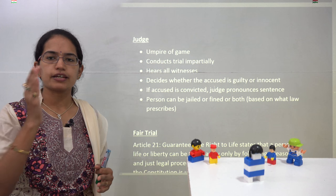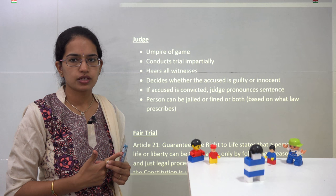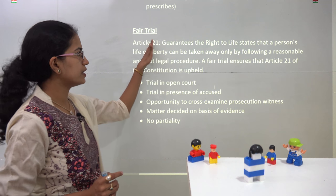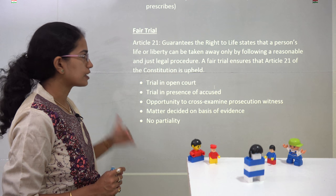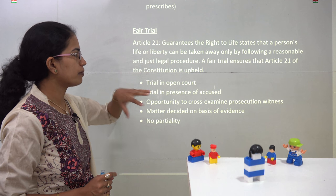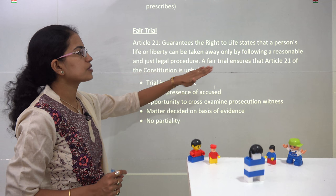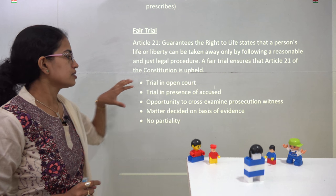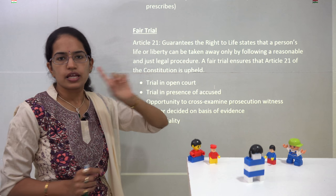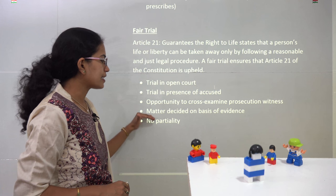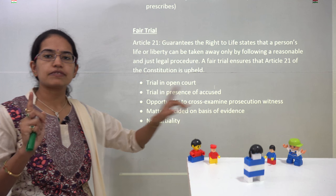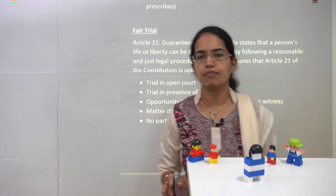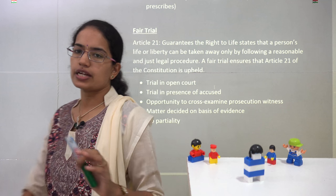What is a fair trial? Article 21 guarantees the right to life, and under the right to life, we talk about liberty from illegal legal procedures — which includes a fair trial. This means the trial would be conducted in an open court, with the presence of the accused, who can cross-examine witnesses. The matter would be decided based on evidence only — not on confessions given in the police room — and there would be no partiality; it would be totally unbiased.